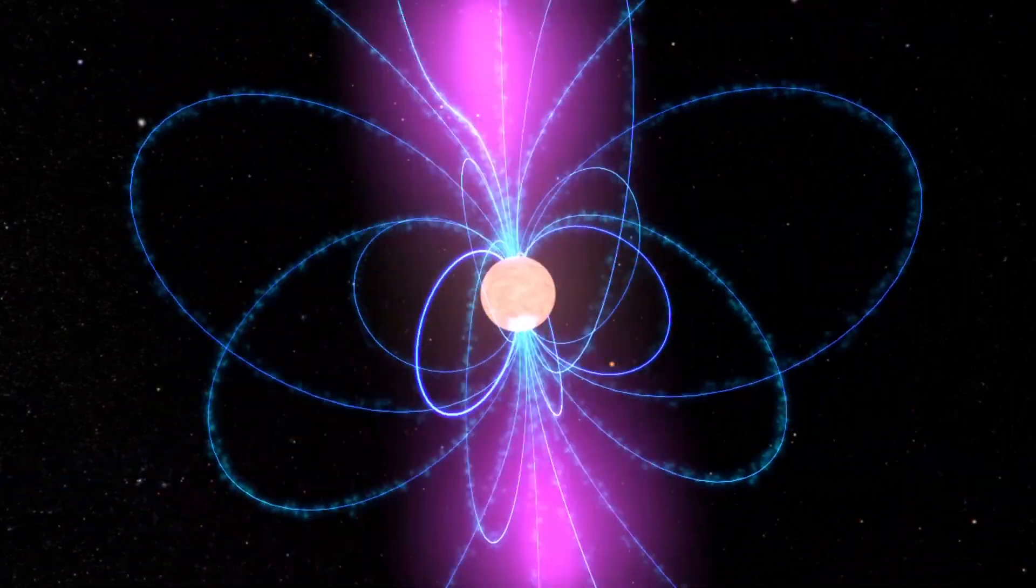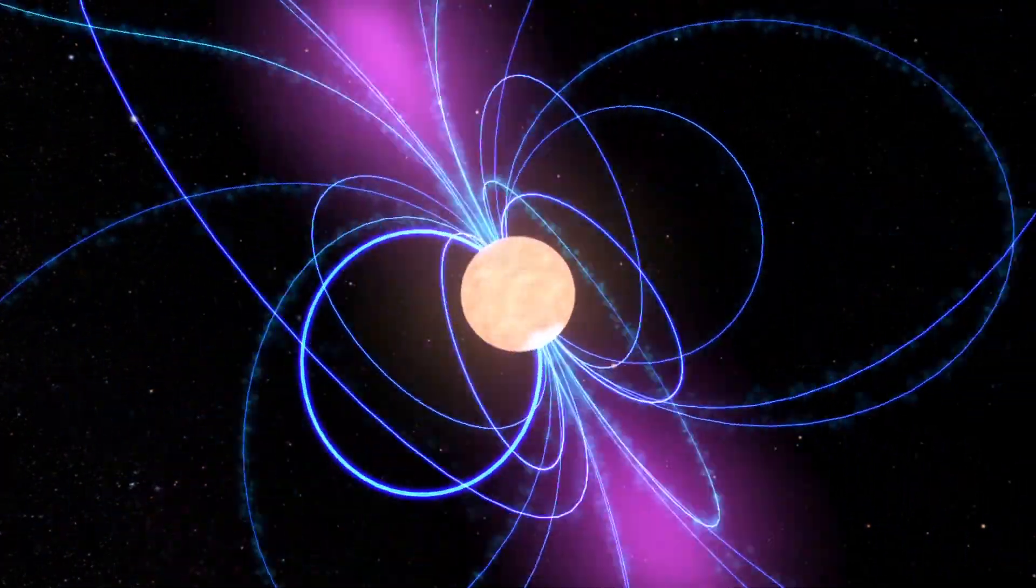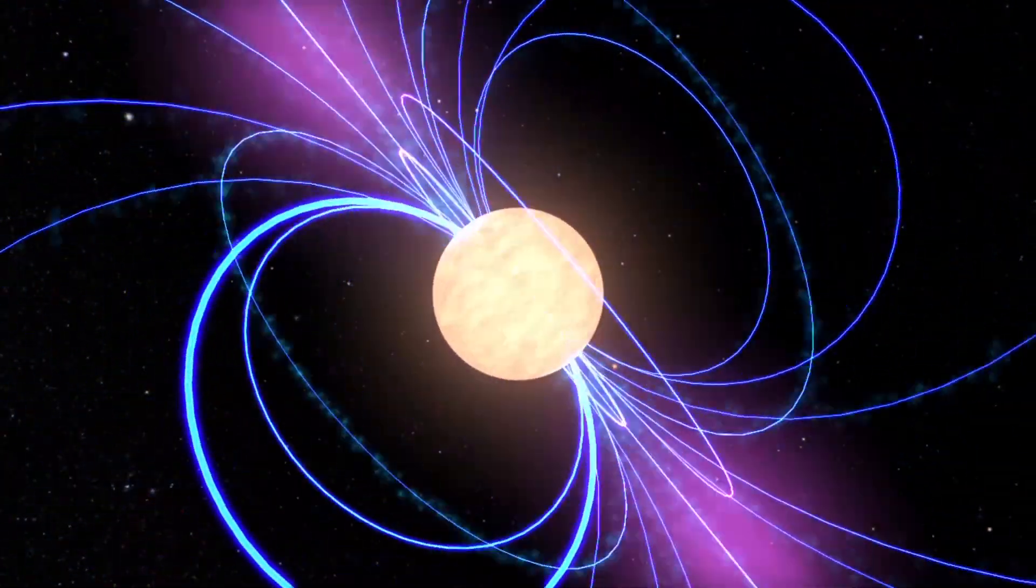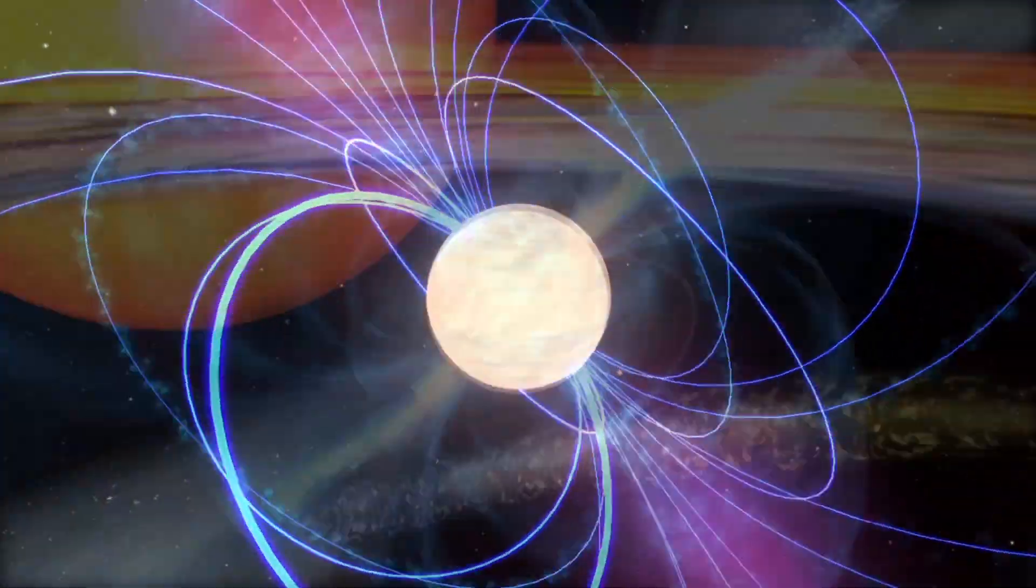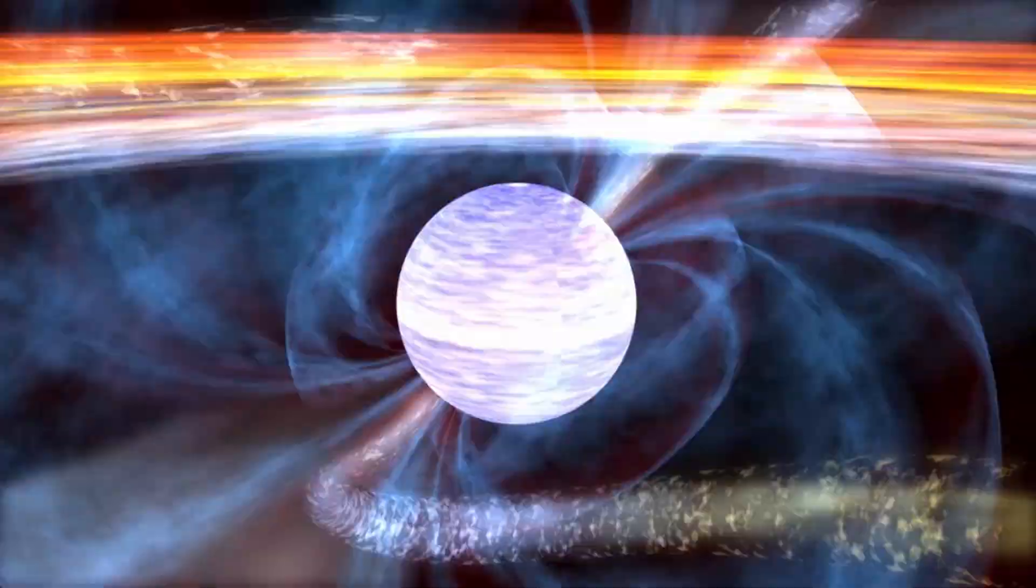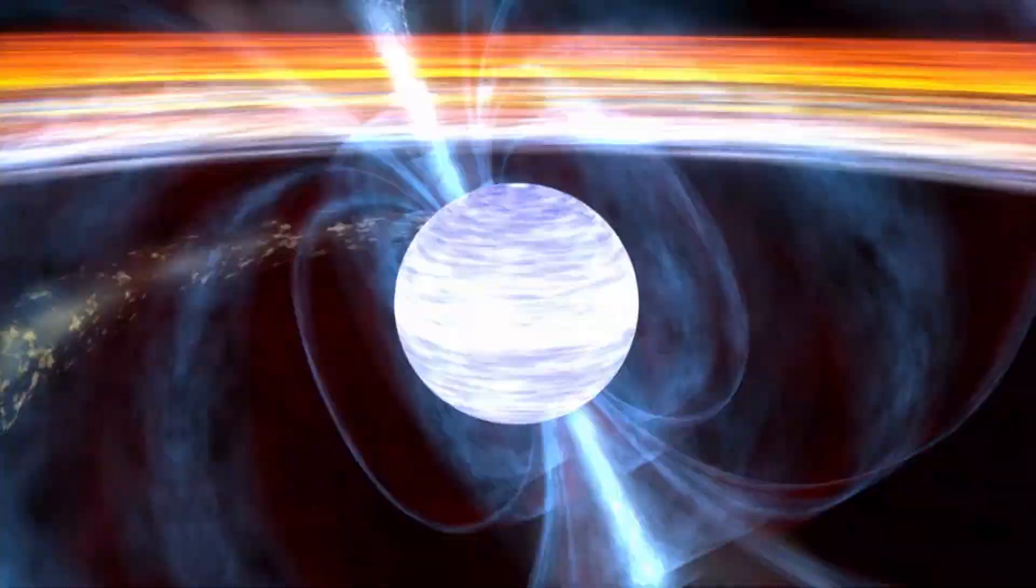This object is a 20-mile diameter super-dense pulsar whirling faster than the blades of a kitchen blender. It spins at 716 times a second, or at 716 Hz. I feel dizzy just imagining this.